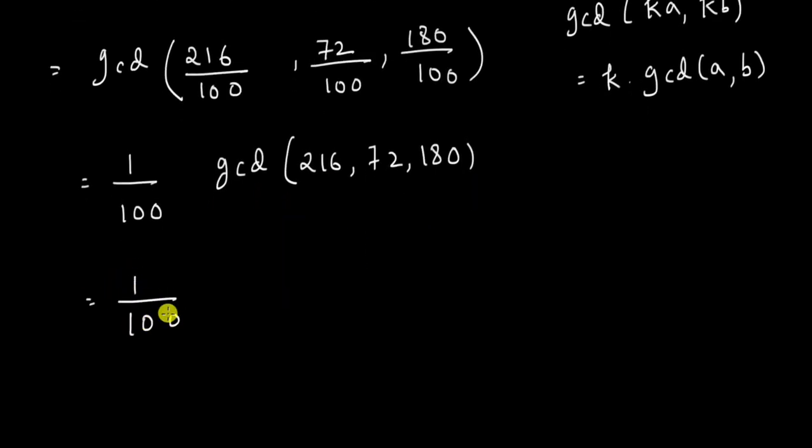So let us see what we have here. So I want to use prime factorization for this. 216 is, I know, 6 cubed. So this is 2³ × 3³ because 6 is 2 × 3. Then 72 I know is 8 times 9. 8 is 2³ and 9 is 3².